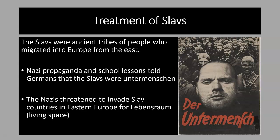The Nazis also threatened to invade Slavic countries in Eastern Europe for Lebensraum — extra living space for Germany's people. They felt that a lot of territory had been taken due to the Treaty of Versailles, and that the conquest of land in the east would give them more space to expand the Aryan population and further their destiny as the master race.